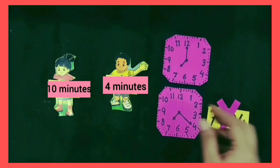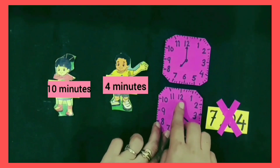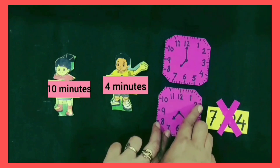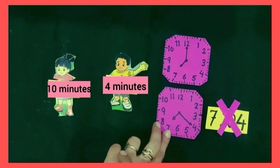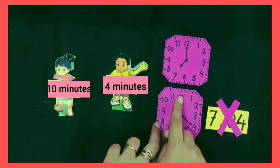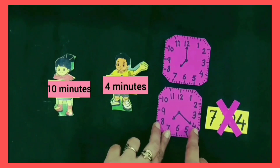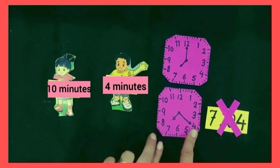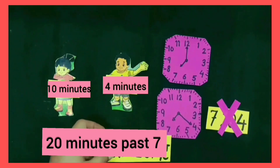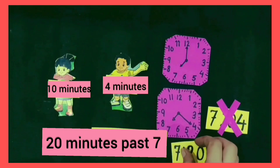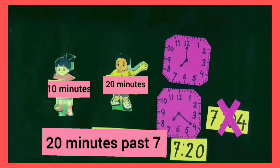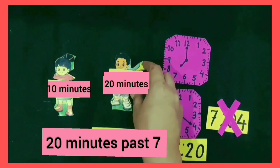Have you noticed the small marks between numbers? Ram said, yes. Kiran said, there are 20 marks from 12 to 4. So it is not 7:04 a.m. You reach school at 20 minutes past 7, which means 7:20 a.m. So you take 20 minutes to reach school.